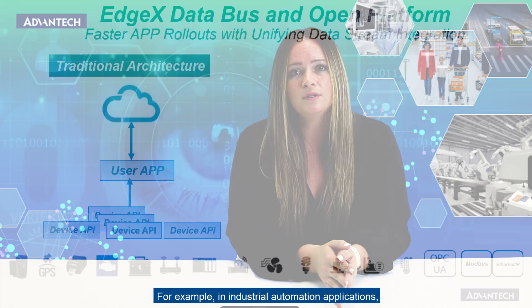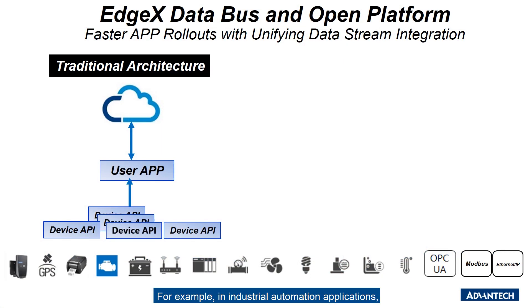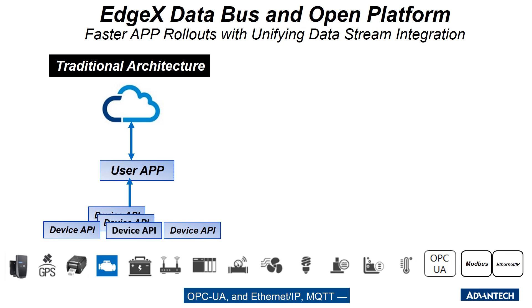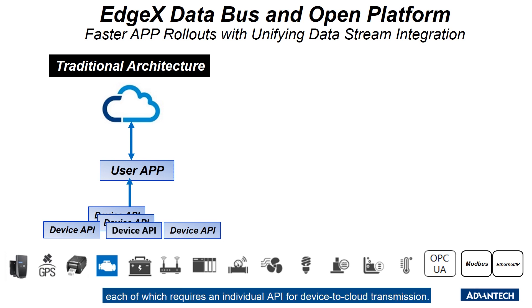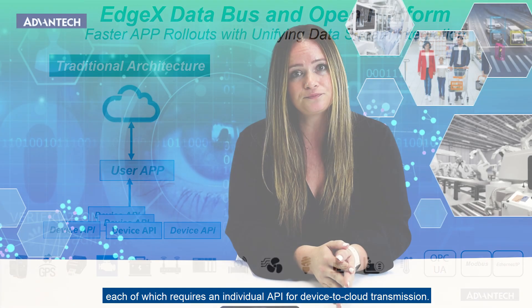For example, in industrial automation applications, users need to deal with a wide range of protocols like Modbus, OPC UA, Ethernet IP, and MQTT, each of which requires an individual API for device-to-cloud transmission.